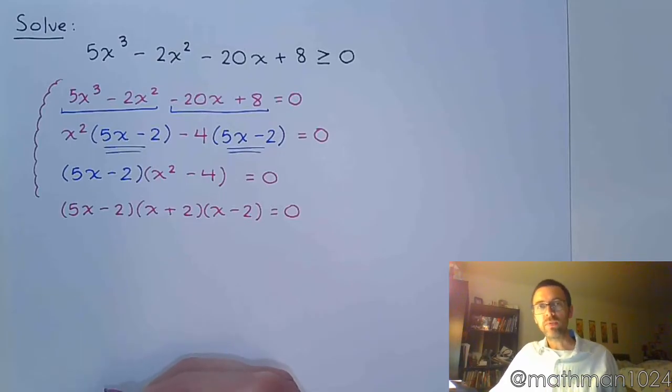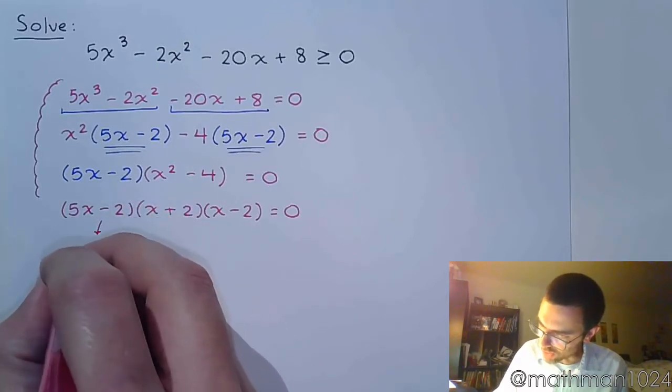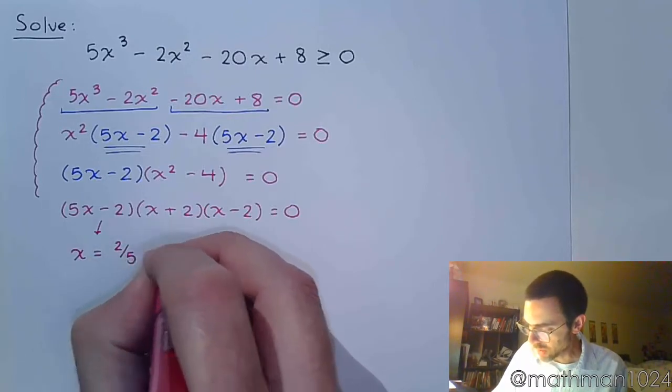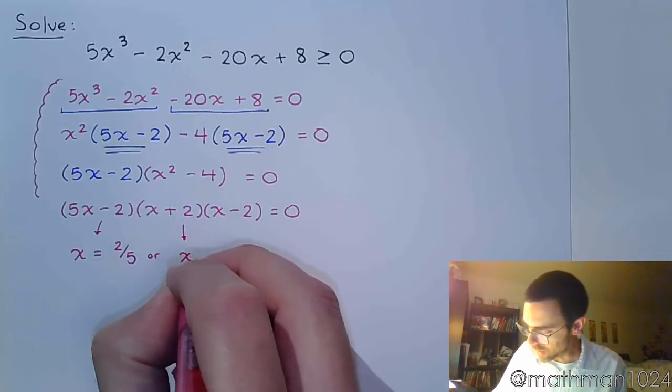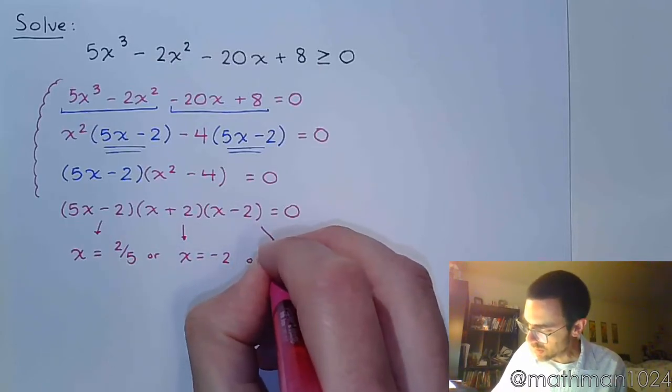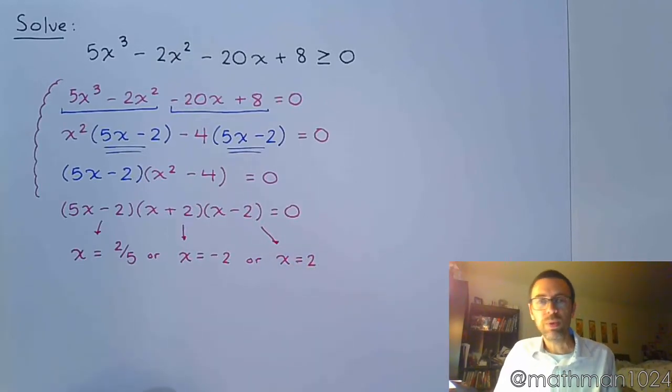And from here, now that we have the complete factorization, we can find all of our critical values. So from here when we set this equal to zero, x = 2/5, or x = -2, or x = 2.